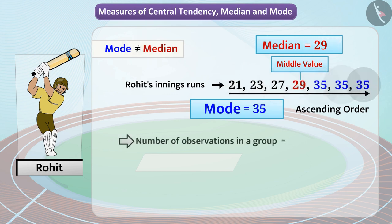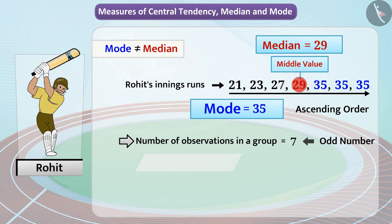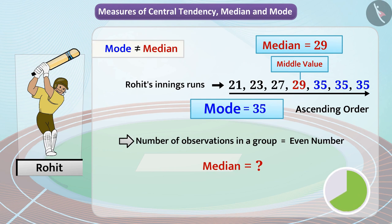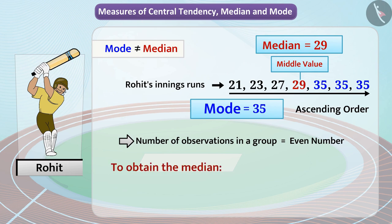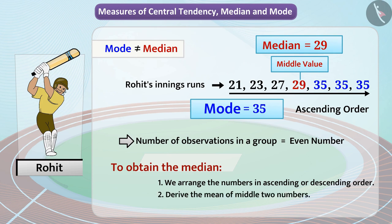The number of observations in these groups is an odd number. So the median of a group of numbers can be found by identifying the middle number when the observations are arranged in ascending or descending order. Can you think of how the median will be deduced if the number of observations is even? In cases where the number of observations is even, to obtain the median we arrange the numbers in ascending or descending order and derive the mean of the middle two numbers.